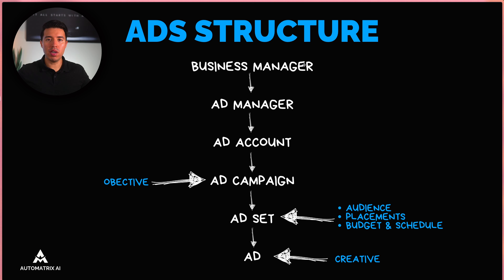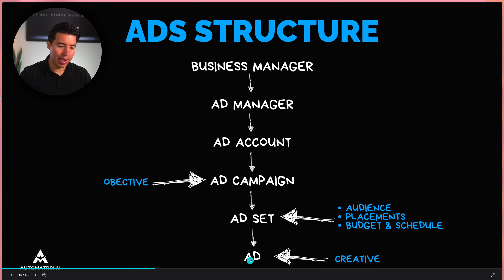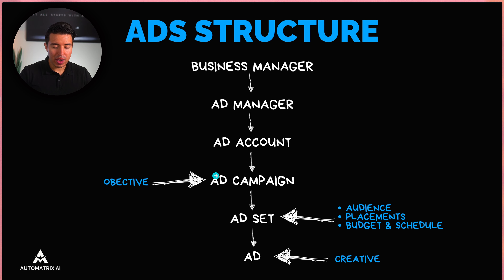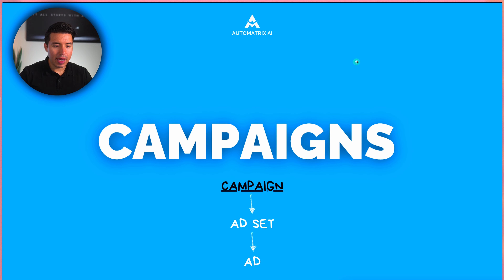Now let's talk about the ad structure. At the top you have your Business Manager, which holds all your assets — your Instagram account, Facebook pages, catalogs, and so on. Underneath that you have Ads Manager, which manages your ad account. From your ad account this is where the magic happens: you have ad campaigns, ad sets, and ads. At the campaign level you set your objective; at the ad set level you set your audience, placements, budget and schedule; at the ad level you set your creative.